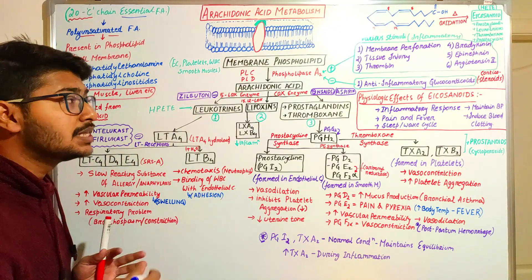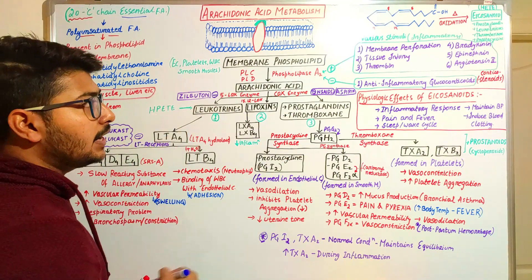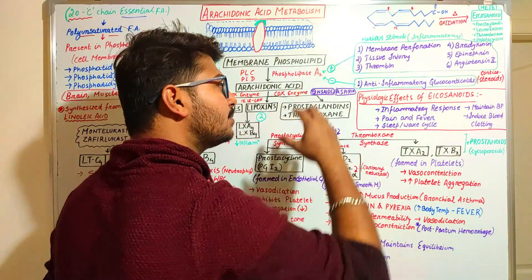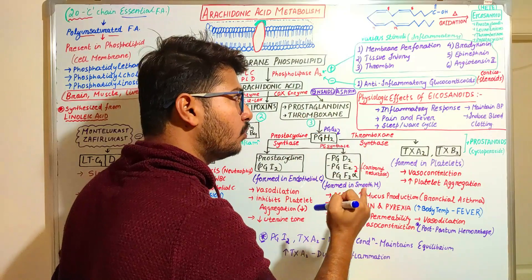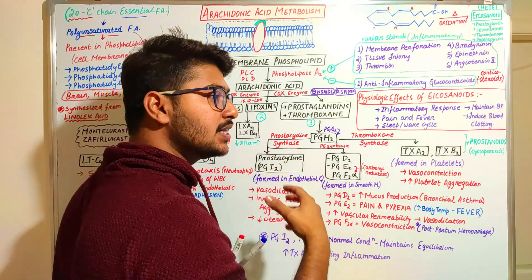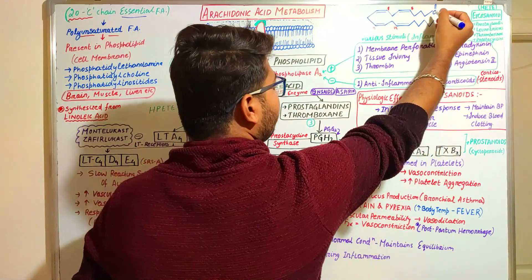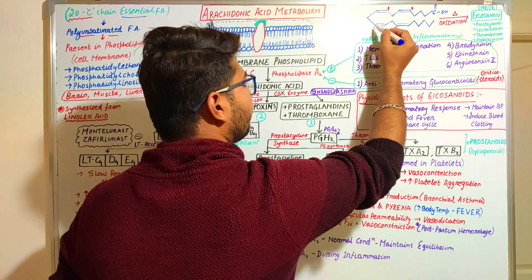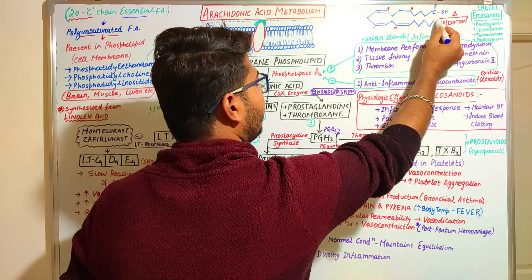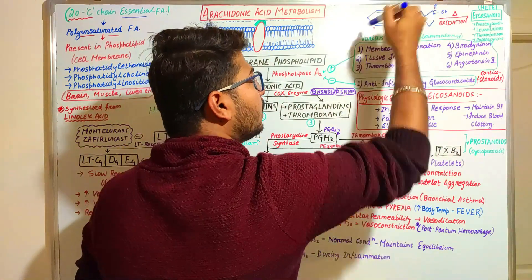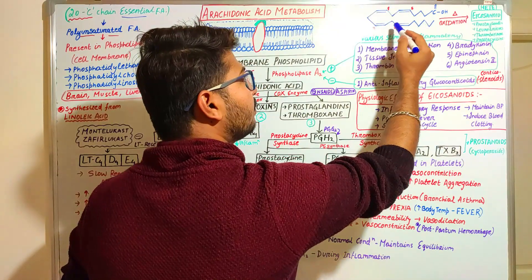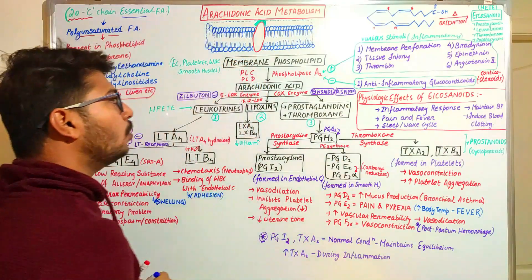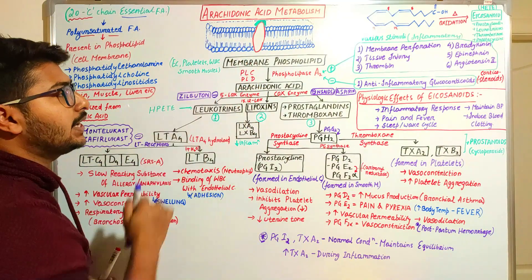The chemical structure of arachidonic acid has 20 carbons and polyunsaturated bonds — double bonds at the 5th, 8th, 11th, and 14th carbon positions. As it has a carboxylic compound, it is known as enoic acid. Metabolism of arachidonic acid means oxidation or breakdown of this compound.